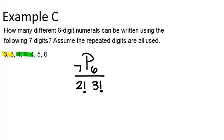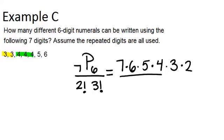Now we just have to calculate this out. And this time I'm going to show you how to do this by expanding out our permutation and factorials. So 7P6 will be 7 times 6 times 5 times 4 times 3 times 2. And on the bottom, 2 factorial is 2 times 1 and 3 factorial is 3 times 2 times 1.